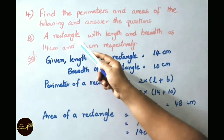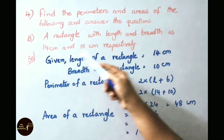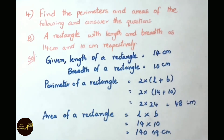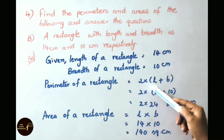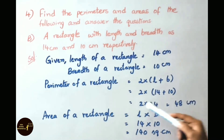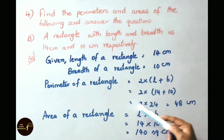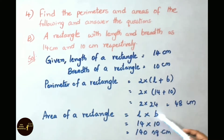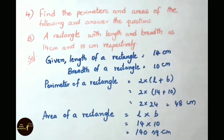Question B: a rectangle with length 14 cm and breadth 10 cm. Perimeter equals 2 into (14 plus 10) equals 2 into 24 equals 48 cm. Therefore perimeter of the rectangle is 48 cm. Area equals length into breadth equals 14 into 10 equals 140 square cm. Therefore area of the given rectangle is 140 square cm.